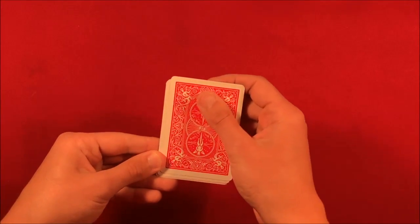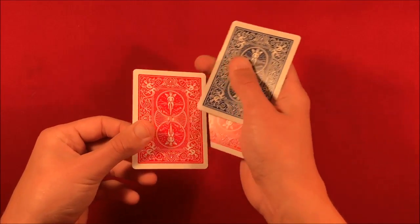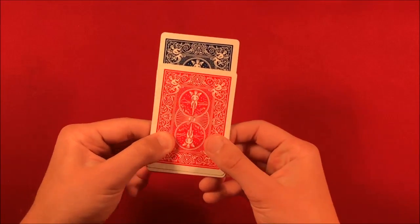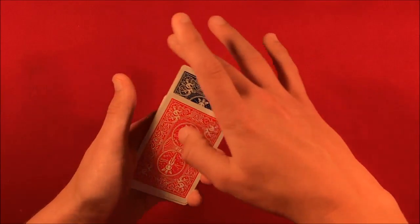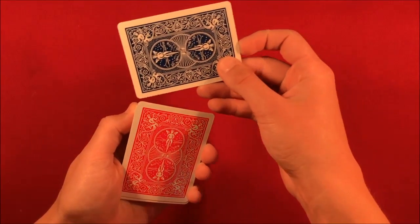And then you do another Elmsley count. You should have one, two, three cards of the opposite color, and you out-jog that last one. So if you're going from blue to red, the last card here on the third Elmsley count, you're going to say, 'Look, I'm still left with one blue card, but watch what happens.' And